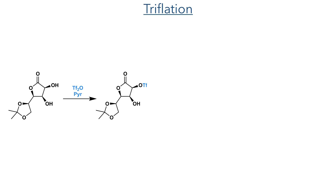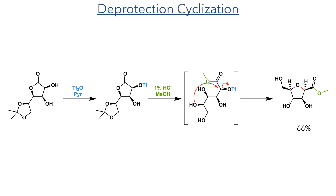Taking this forward, the hydroxyl group alpha to the ester was selectively triflated using triflic anhydride and pyridine. The resulting compound was then reacted with methanol/KHCl, which hydrolyzes the acetal and also opens the lactone ring, forming a methyl ester. The compound then undergoes a 5-exo-tet cyclisation, eliminating the triflate and forming the furan in a 66% yield.